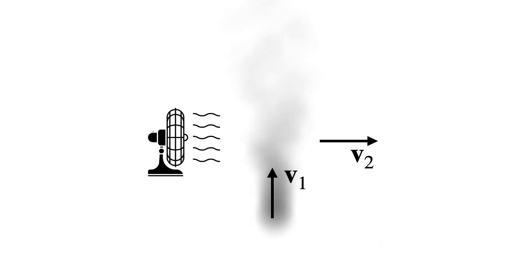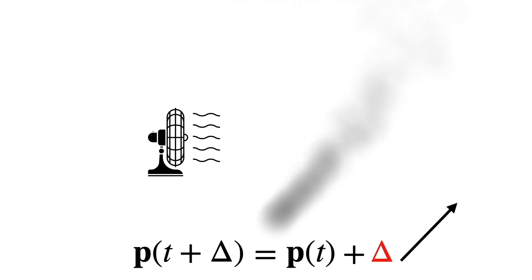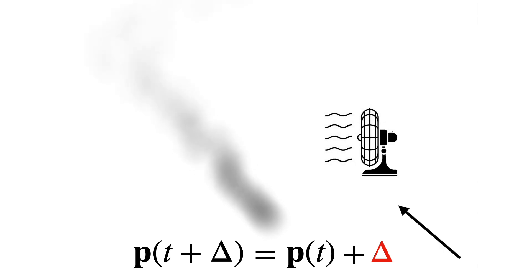Now, if we add some wind blowing to the right, the velocities combine to get a new update. And changing the Euler update direction simulates varying the wind direction.